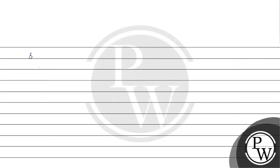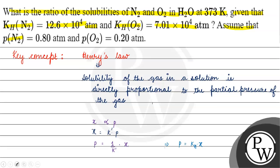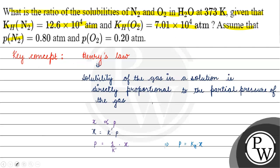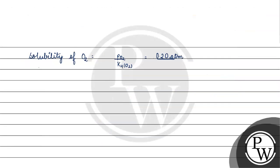Solubility of oxygen will be equals to partial pressure of oxygen divided by Henry's Law constant for oxygen. Partial pressure of oxygen is 0.20 atm, and Henry's Law constant for oxygen is 7.01 × 10⁴ atm. So the solubility of oxygen equals 0.20 divided by 7.01 × 10⁴.